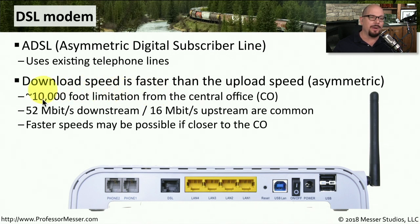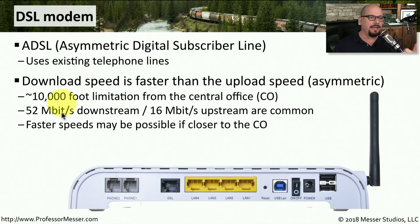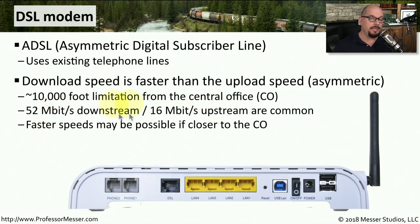The limitation is somewhere around 10,000 feet, which is not an incredibly long distance when you consider how dispersed our different homes are from these central offices. You'll generally get 52 megabits per second down and 16 megabits per second upstream, but these numbers can vary widely depending on how far away you are from the CO. As you begin to move farther away, you'll start to see these speeds get slower and slower.